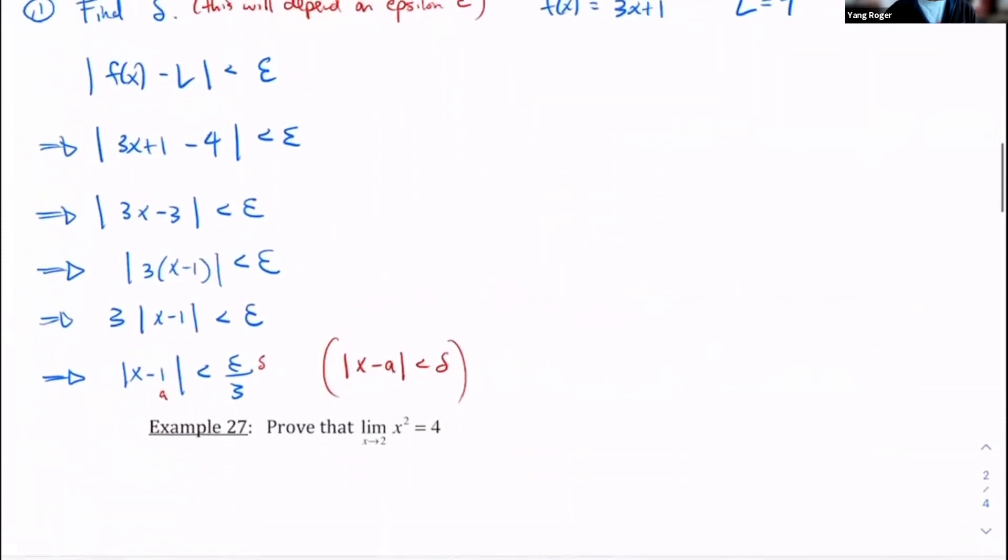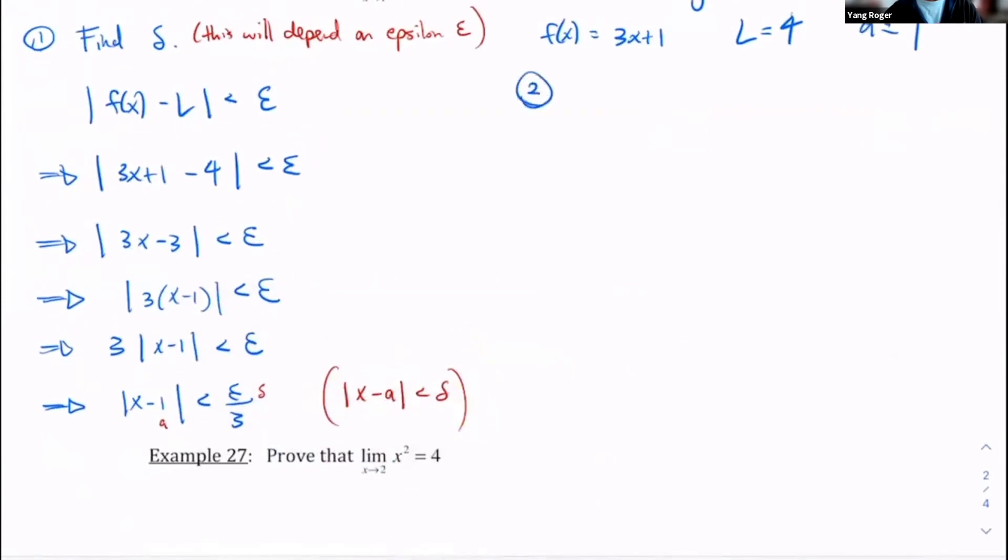All right, so let's look at the second part. The second part says, this is the proof part. Okay, so we let epsilon greater than zero be given. We choose delta to be equal to epsilon divided by three. I want to show that x minus one less than delta implies that f of x minus L is less than epsilon. If I could show that this is always true, then the limit exists.